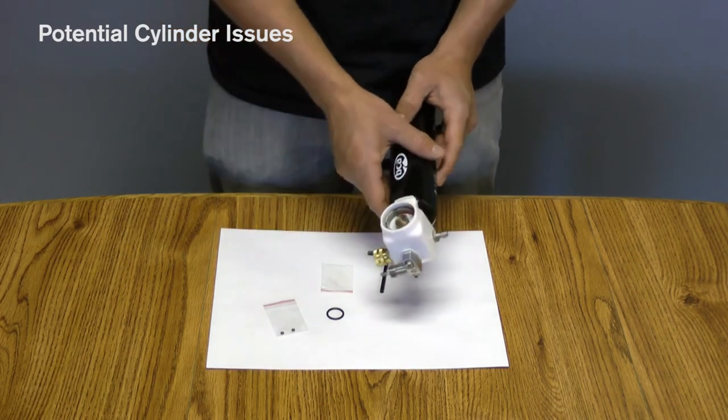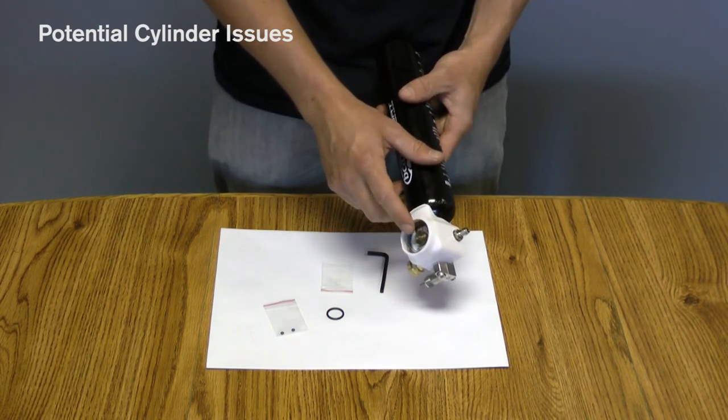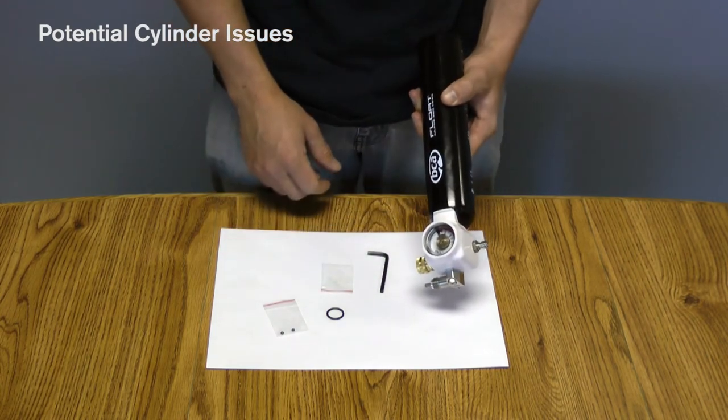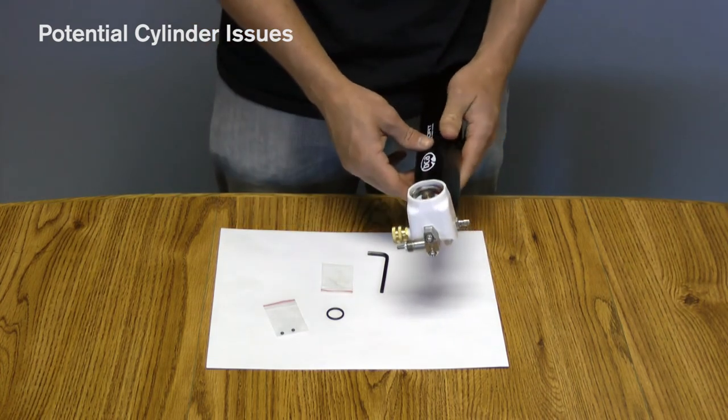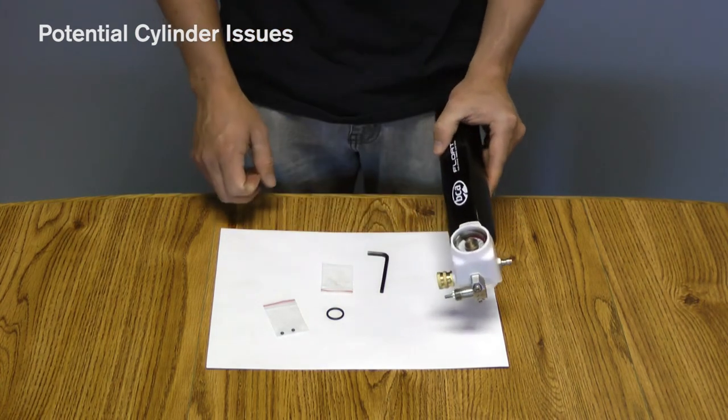Things as far as a gauge going bad - that's something where you're just going to want to contact BCA, and we'll help you out with either a warranty or figuring out a way to get that gauge fixed for you.